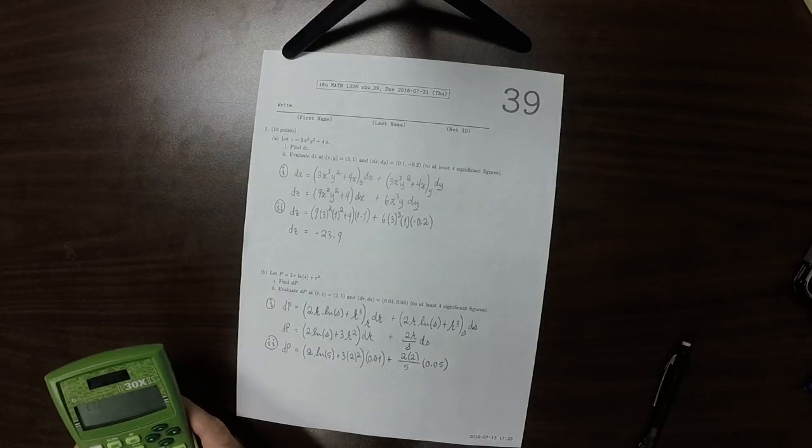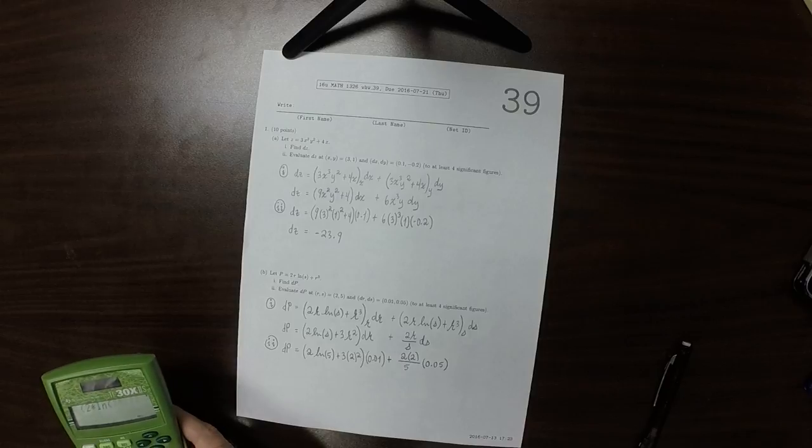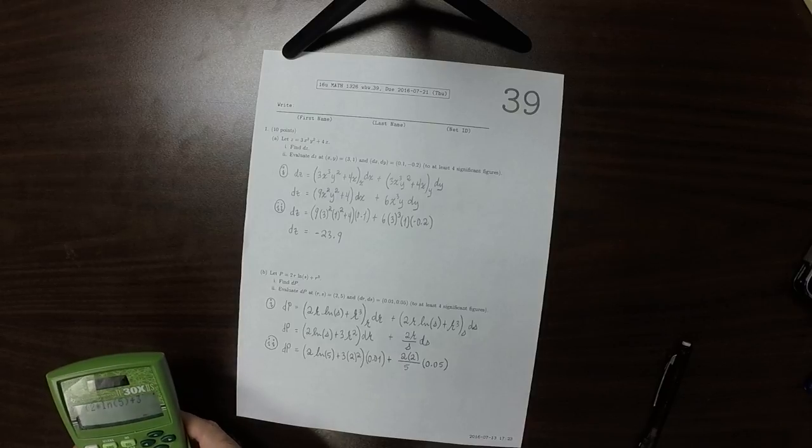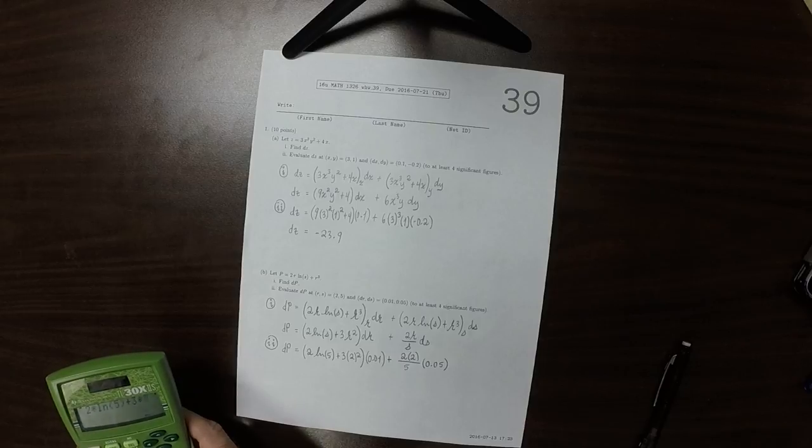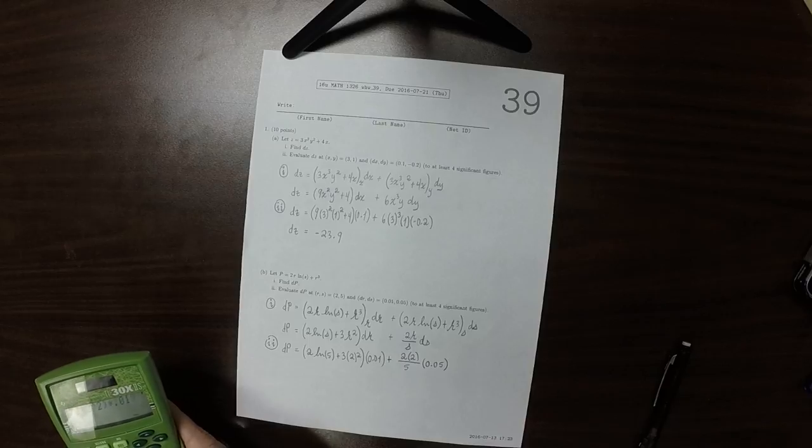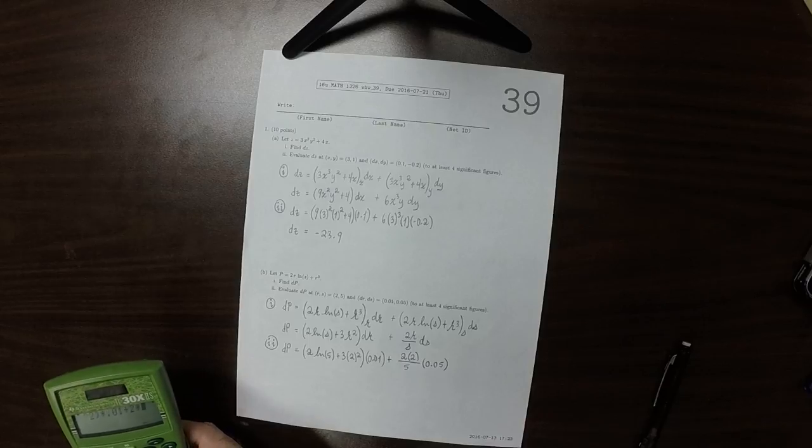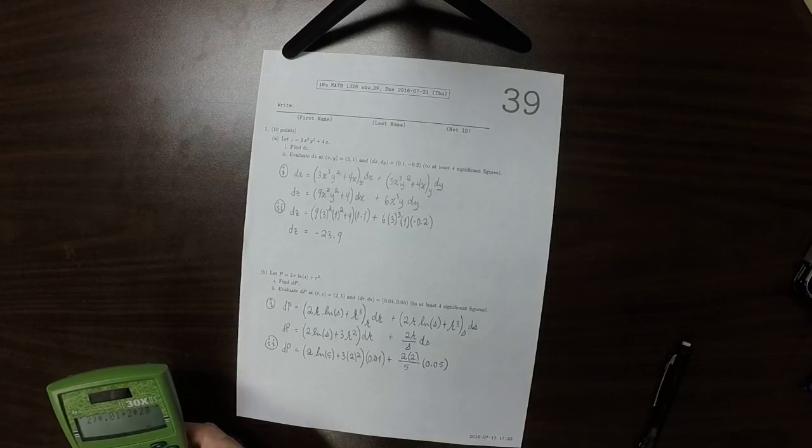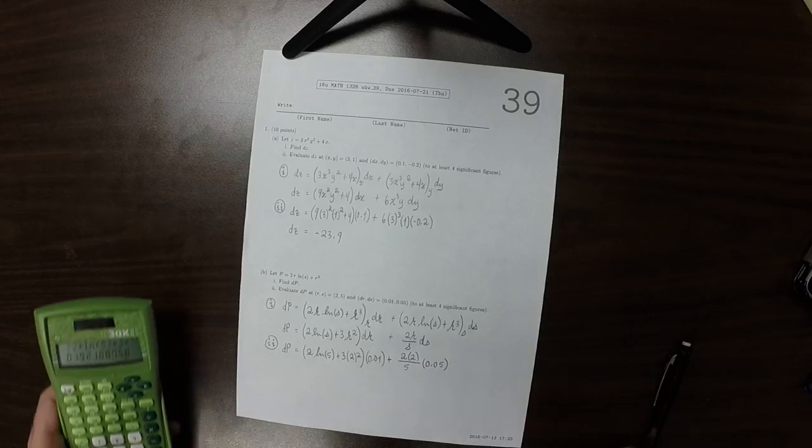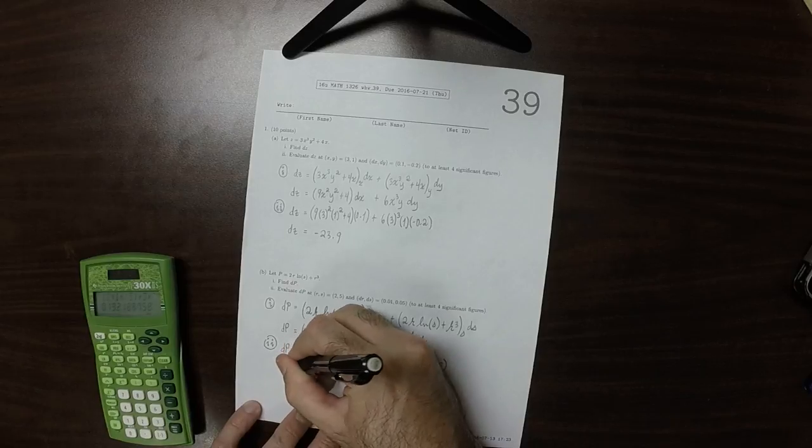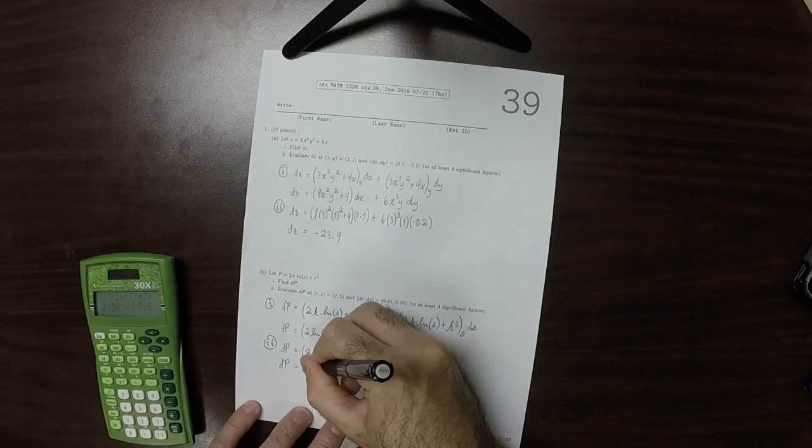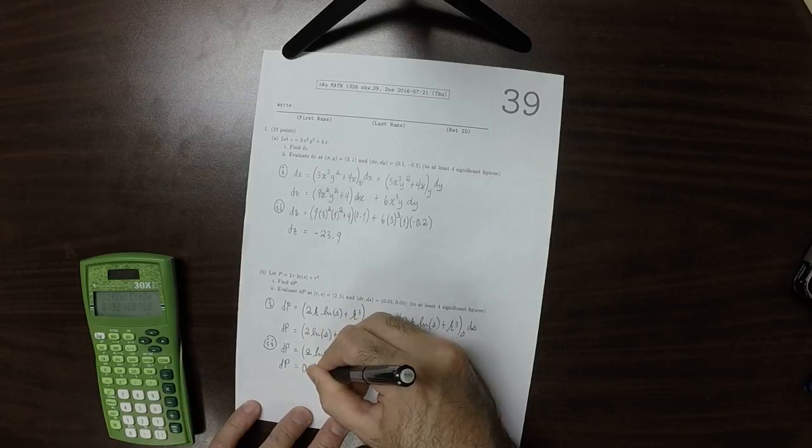So that is 2 times log 5 plus 3 times 2 squared times 0.01, plus 2 times 2 over 5 times 0.05. So dp is 0.192188758.